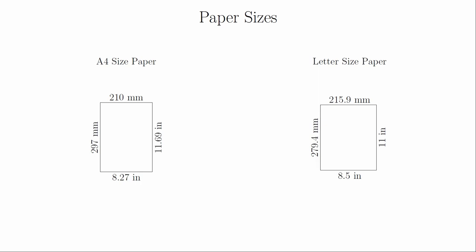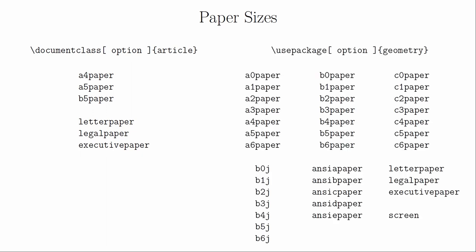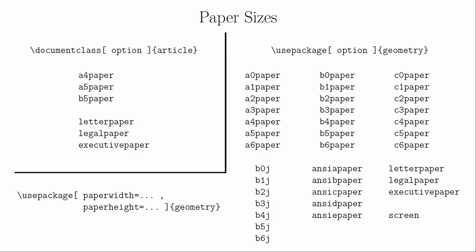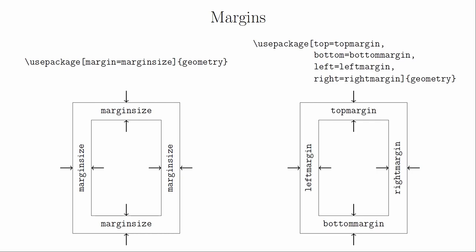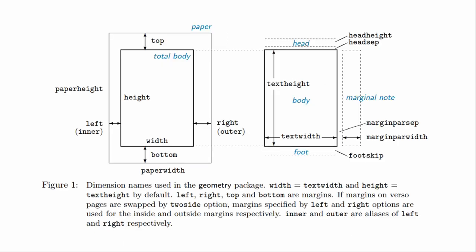If you wanted to change the paper size, you could do it as an optional parameter for the document class. But this can also be done with the geometry package, which has a much more robust collection of paper sizes to choose from. You can even create a custom paper size by setting the paper width and paper height values as optional parameters. Previously, we had defined all the margins to be the same, but the geometry package lets you specify each margin separately. There are actually many more parameters you can specify using the geometry package, and it's a good starting point if you want to understand the finer details about how LaTeX dimensions work.